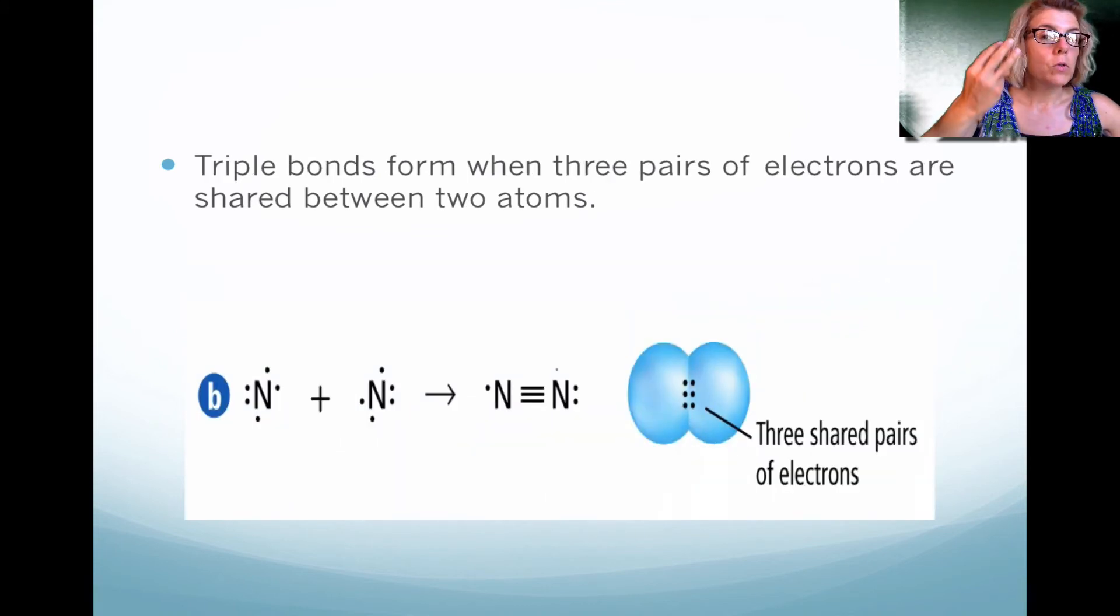Triple bonds. We could have a triple bond where we essentially have three overlapping covalent bonds. Notice with nitrogen, you essentially have a total of six electrons that are being shared, or three pairs.